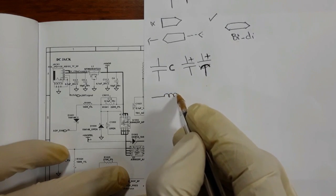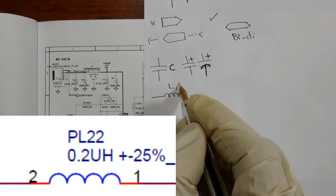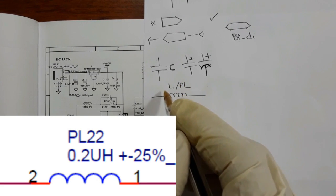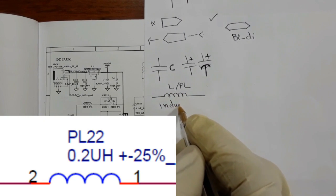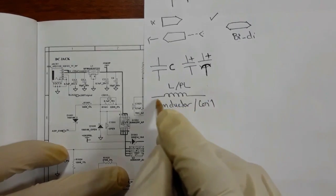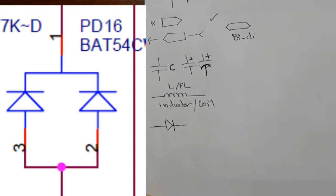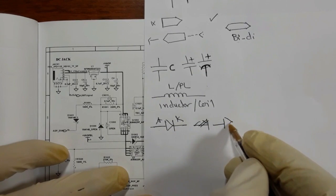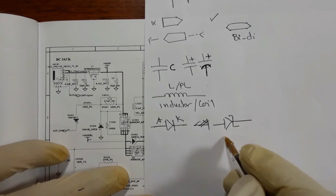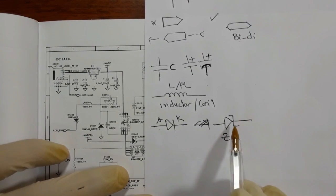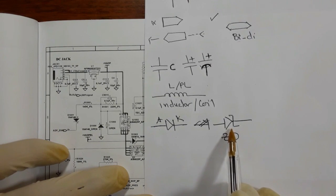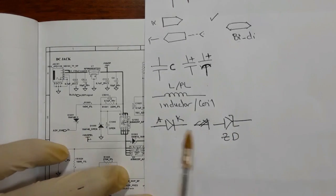For this symbol, as you can see, this is an inductor — L or PL. The reference you can find in some motherboards is L and in others PL. This is an inductor, or coil. For the diode, we have this symbol with anode and cathode, or plus and minus. You can also find this type — this is a Zener diode, which is used to stabilize the current. This is a normal diode and this is a Zener diode. We will see all this in the schematic.